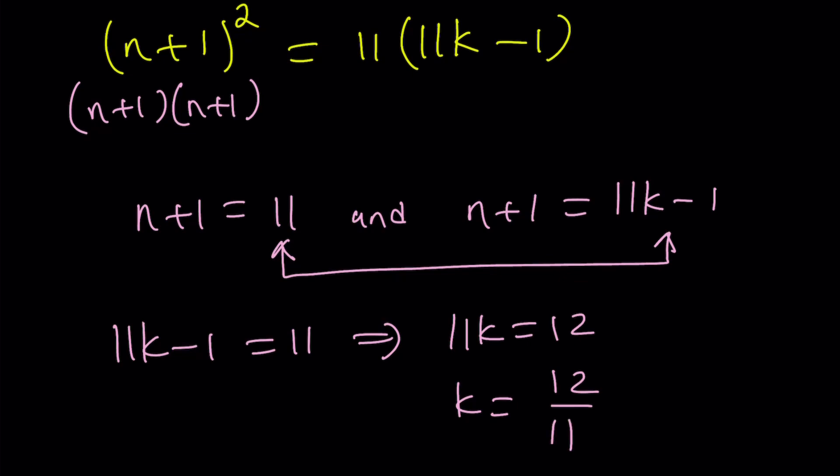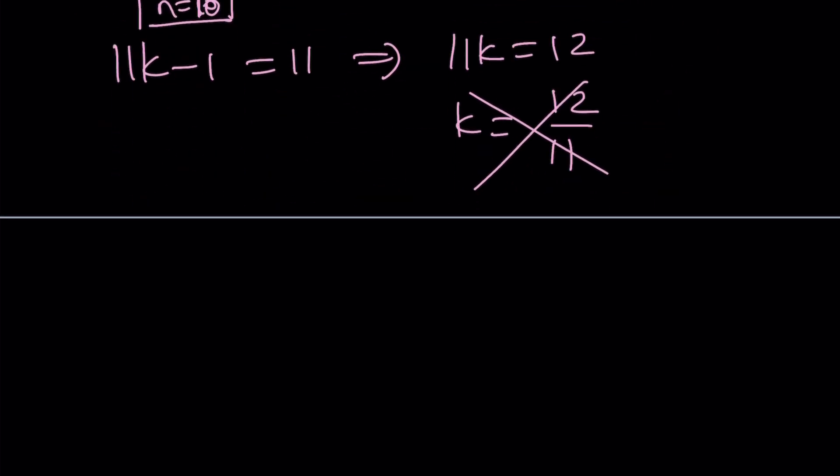Uh oh that's not good because k must be an integer. And when k is equal to that n is going to be 10. But we're not going to have any solutions because 12 over 11 is not an integer. Okay? So let's go ahead and take a look at the second method.